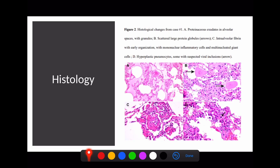So overall, what you're seeing is a lot of proteinaceous exudate, a lot of inflammation, and a lot of fibrin deposition.